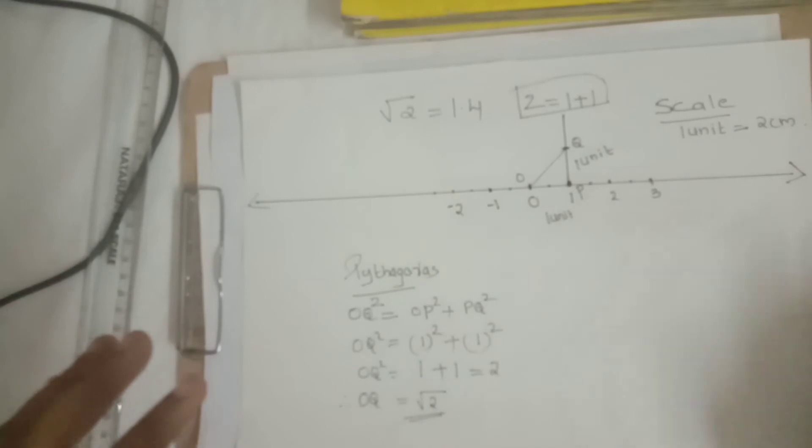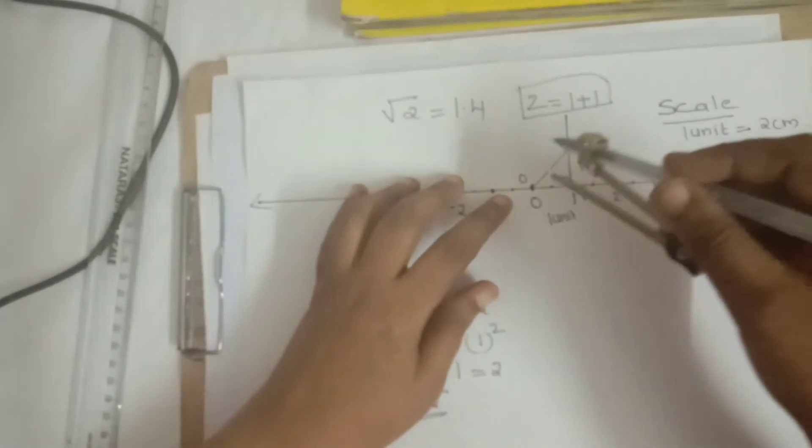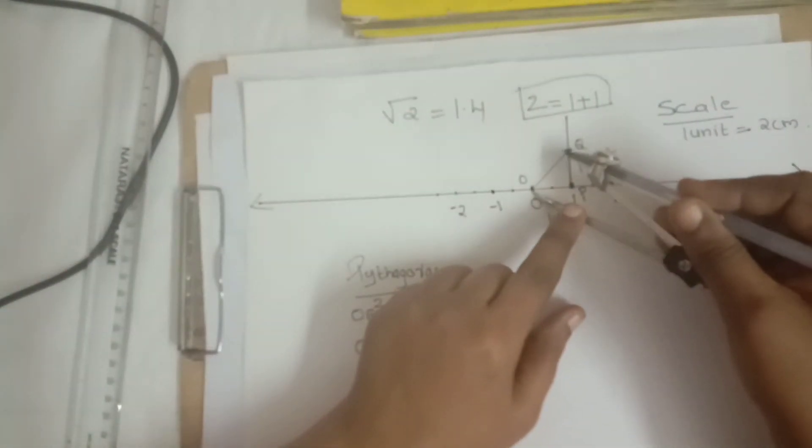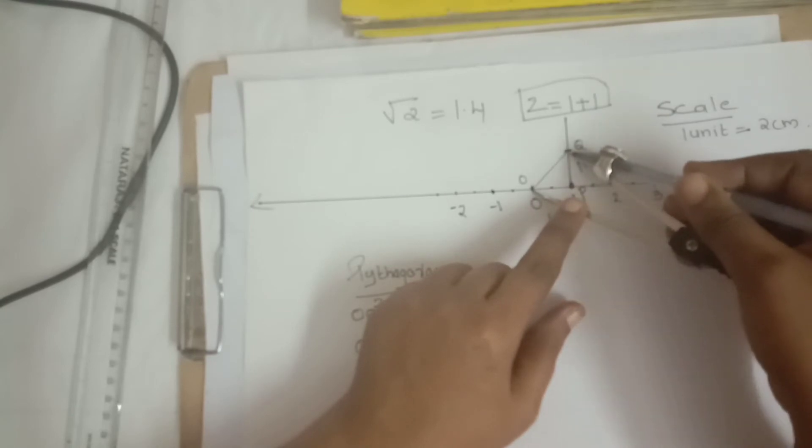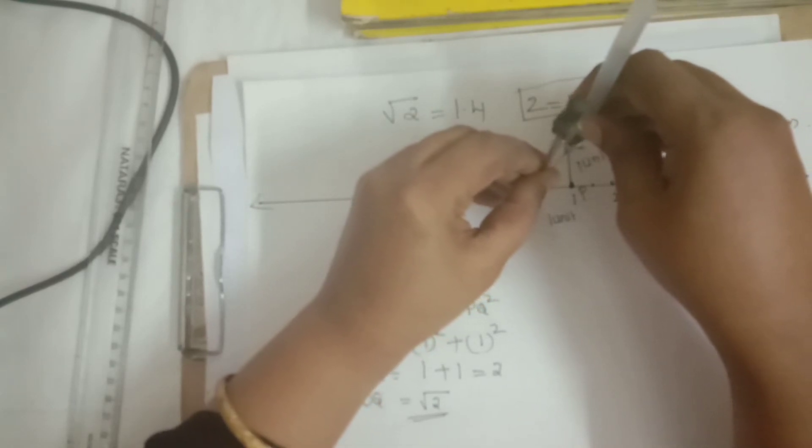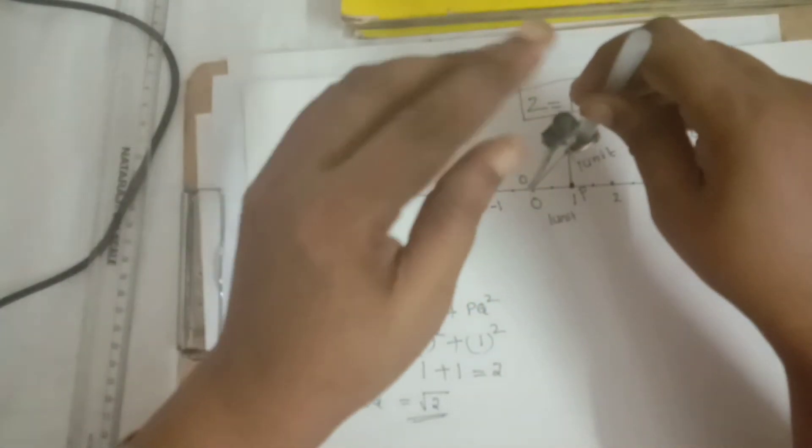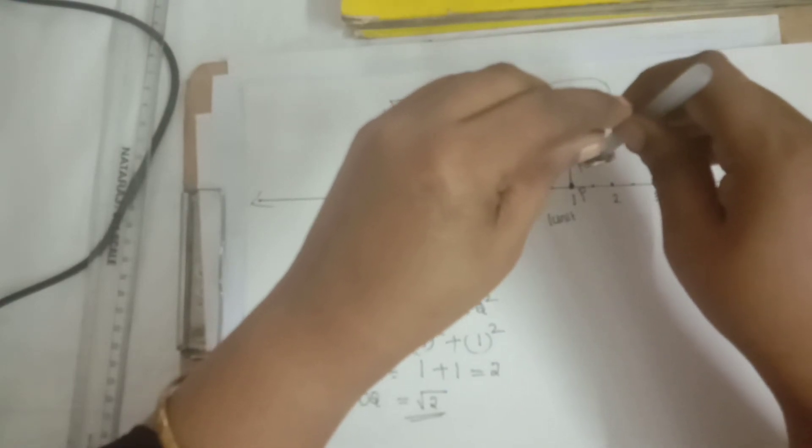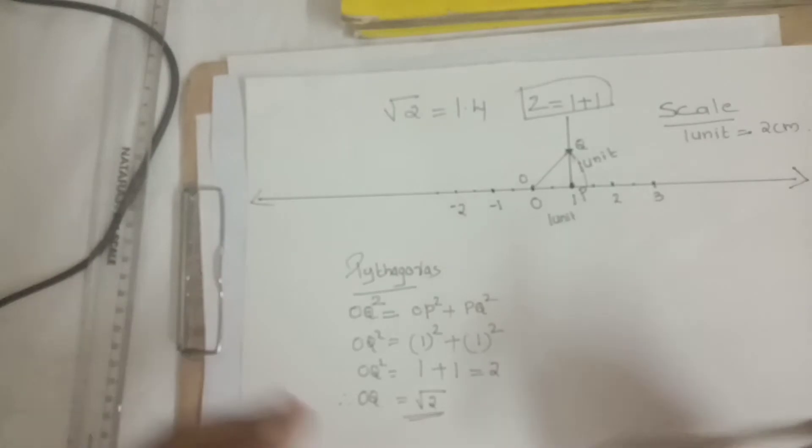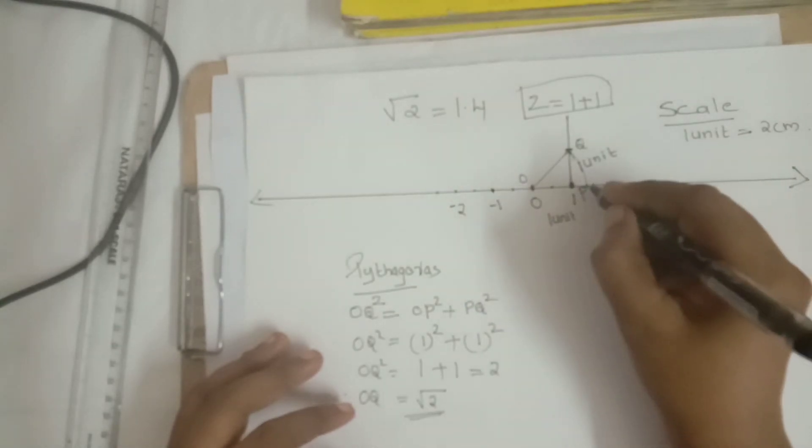But our √2 is on the outside of the number line. We want to measure this measurement. So what we want to do is take the distance between O to Q, like this. With the compass take the distance between O to Q. Using that measurement, draw with O as center and OQ as radius, draw an arc like this.